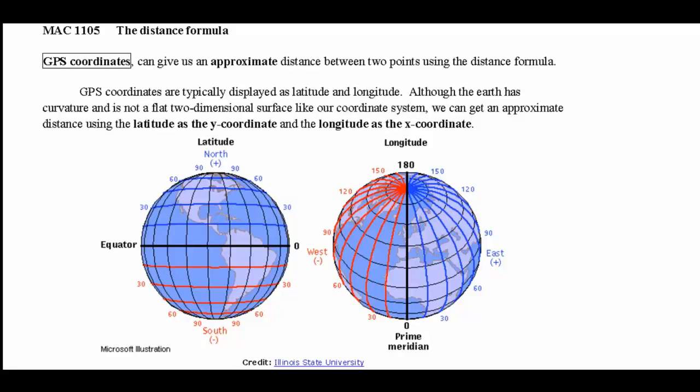This activity is an application of the distance formula and we're going to use that to find an approximate distance between two points on the globe. The points' positions are identified by latitude and longitude.